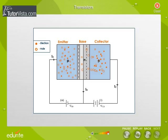These holes have a tendency to combine with the electrons in the N region of the base. Only a few holes are able to combine with the electrons in the base region, giving only a small base current, IB, because the base is lightly doped and very thin.